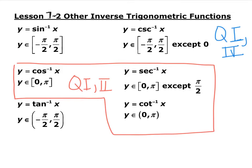This slide is reminding us about the ranges of the inverse trig functions from 7.1. If they live in the 'sideways L' region — cosine inverse, secant inverse, and cotangent inverse — they give you angles between 0 and π in quadrants 1 and 2. If they live outside the sideways L — sine inverse, tangent inverse, and cosecant inverse — they live in quadrants 1 and 4.